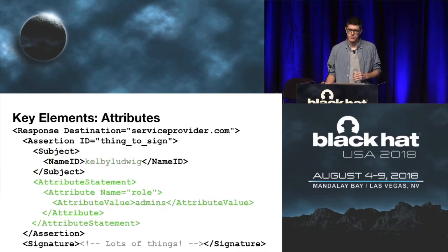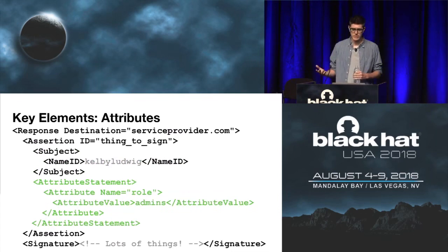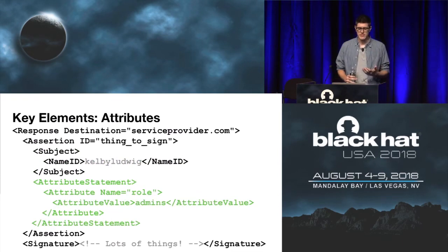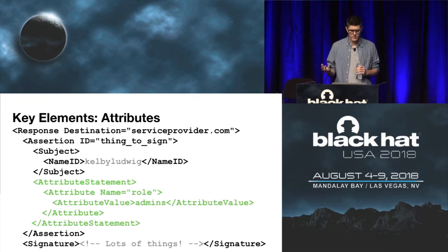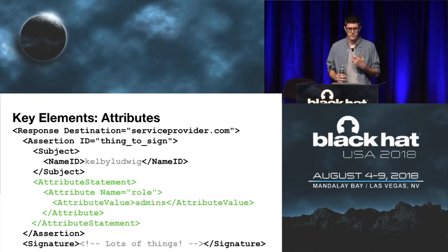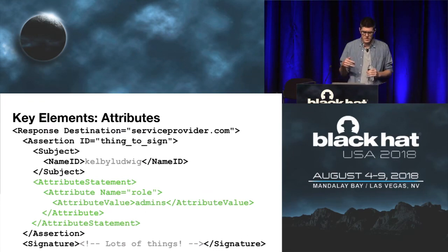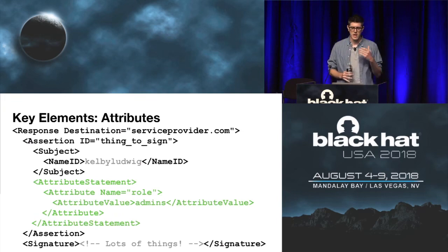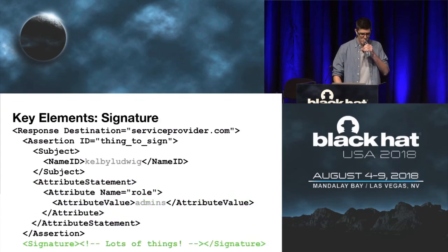The next interesting set of elements are the attribute statements and attributes. An attribute statement is just a set of attributes — general properties of the user that the identity provider may want to convey to a service provider. For example, an identity provider may use a username for a name ID but also wants to inform a service provider of the user's email for notification purposes. You could also use the attributes section to convey access control roles, like indicating that this person is an administrator.